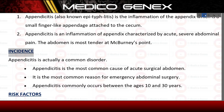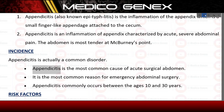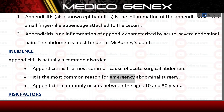Incidence. Appendicitis is actually a common disorder and is the most common cause of acute surgical abdomen. It is the most common reason for emergency abdominal surgery. Appendicitis commonly occurs between the ages of 10 and 30 years.